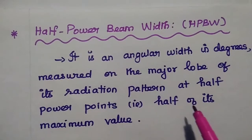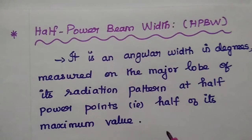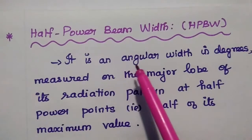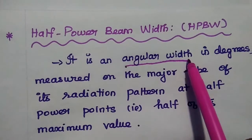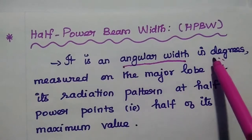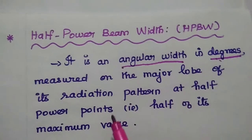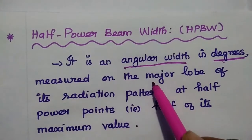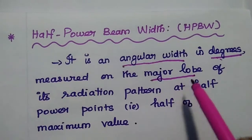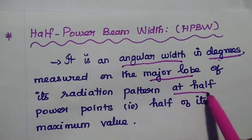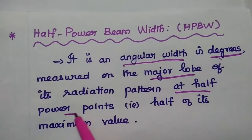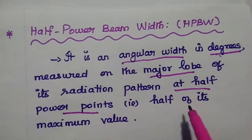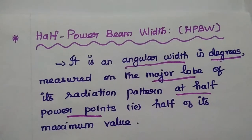Half power beam width (HPBW) is an angular width in degrees measured on the major lobe of its radiation pattern at half power points — that is, half of its maximum value. The key point is that HPBW is an angular width measured in degrees on the major lobe at half power points, where half power points means half of its maximum value.